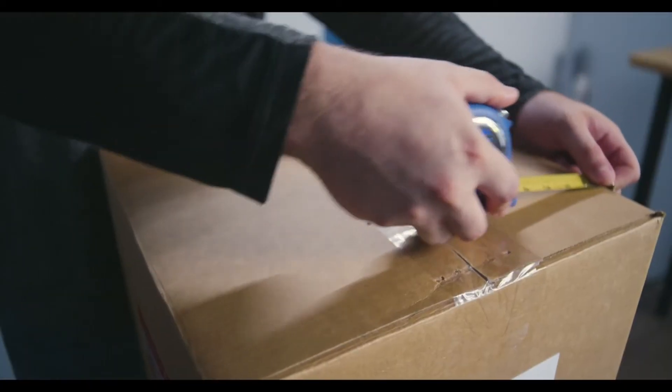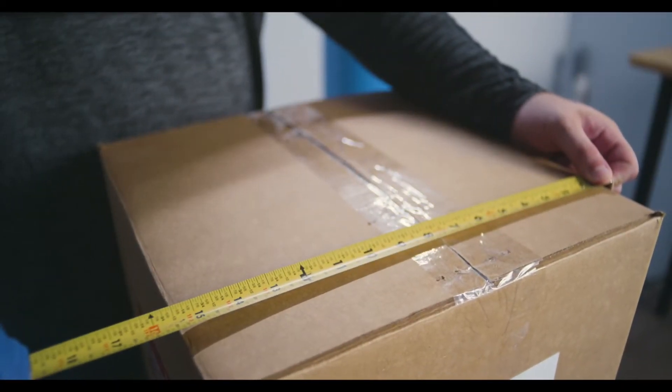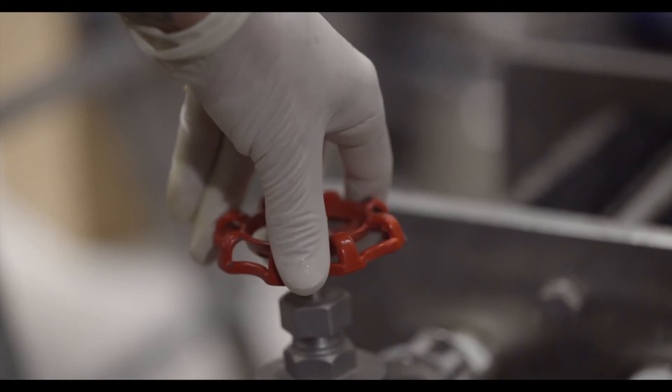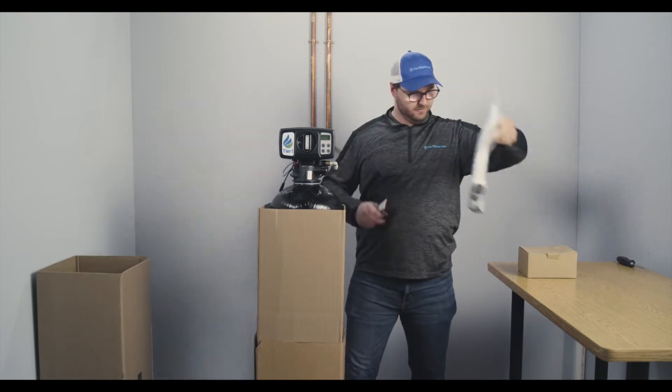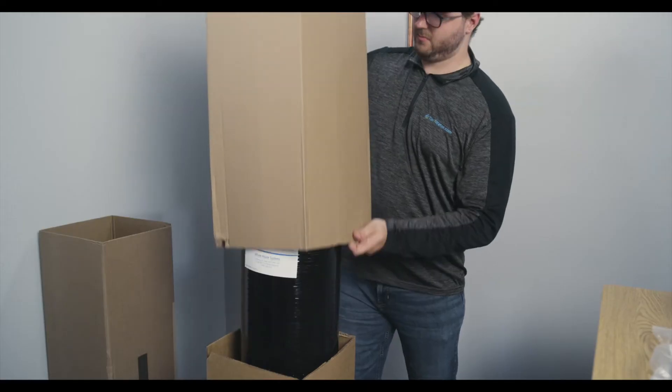To begin, check that the system will fit in the location selected. Turn out the water source at the inlet to your home. Open the box, lay out all the system components, double checking to make sure you have everything.